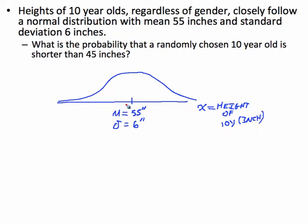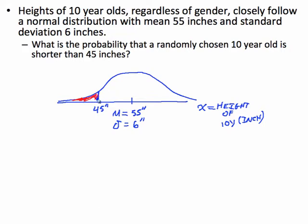They want to know the probability that a randomly chosen ten-year-old is shorter than 45 inches. Going down one standard deviation from 55 would be about 49, so 45 is going to be roughly there. They want this area down here, because that area represents that proportion. They gave us a value on the axis and we want the corresponding proportion of values that fall below that.